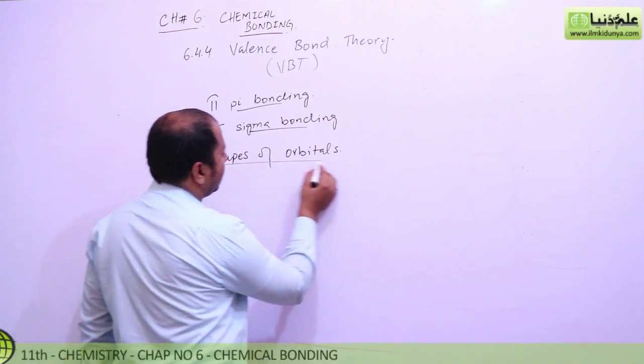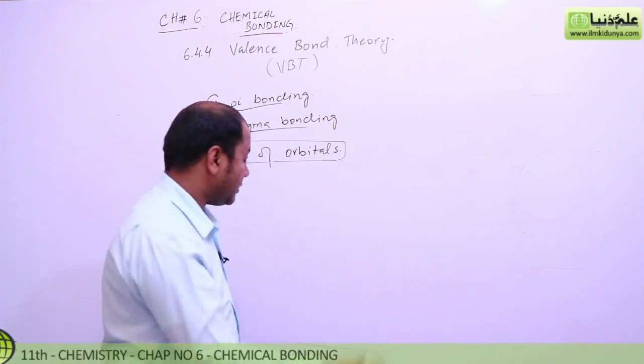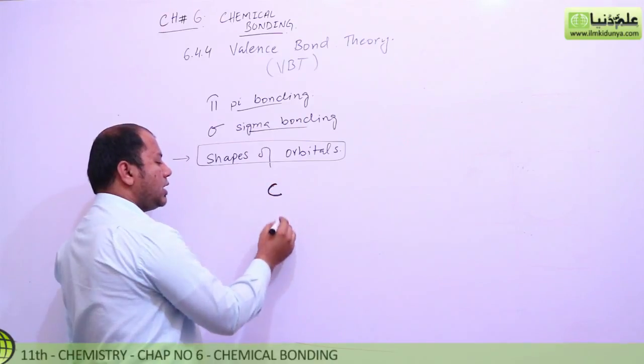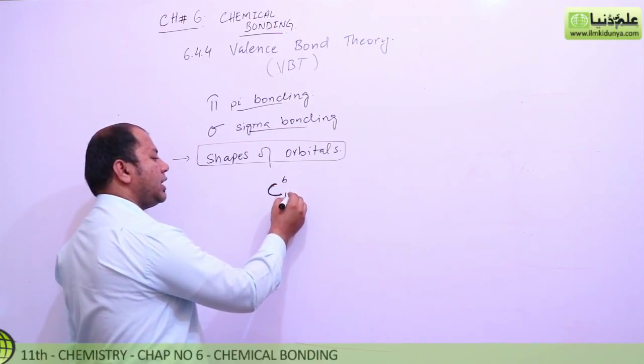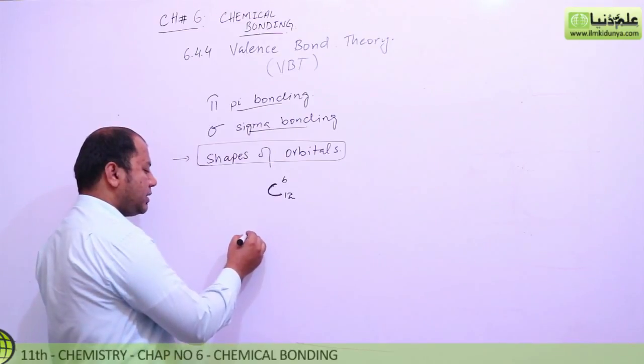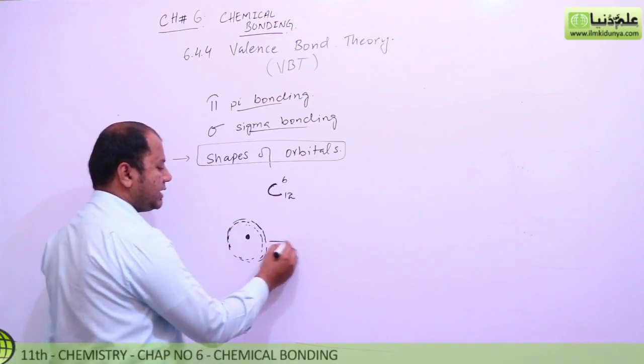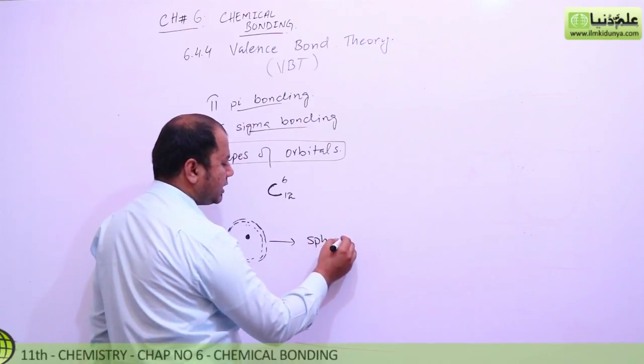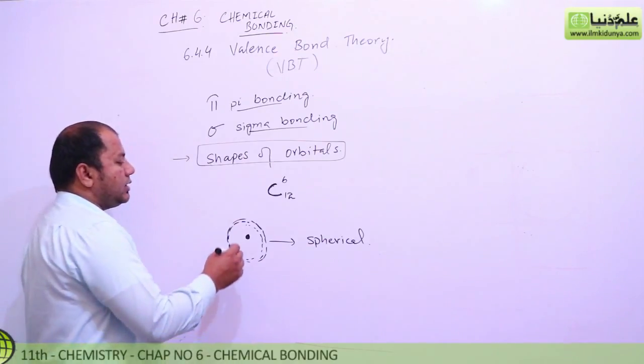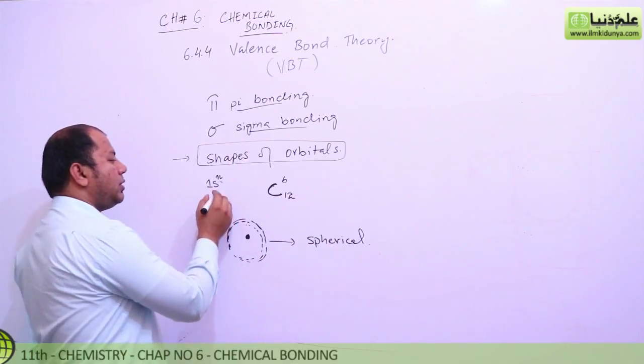Let me explain with a carbon atom as an example. Carbon has six protons, mass 12, and six electrons. Let's draw the nucleus and the first shell, which is circular and spherical where electrons revolve. We need to recall the structure of molecules from the last chapter. The configuration is 1s2, with electrons in opposite spin according to Pauli's principle.